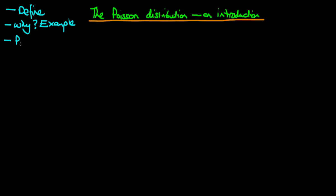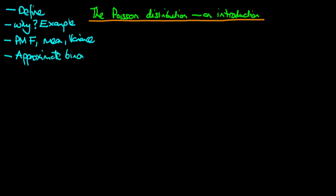We're then going to talk about the probability mass function of a Poisson distribution. In particular, we're going to derive its mean and state its variance, although it can be obtained in a very similar way to the mean. We're then going to talk about the circumstances under which the Poisson distribution can be used to approximate a binomial distribution. We're going to finish this introduction by stating the conjugate prior distribution of a Poisson distribution.